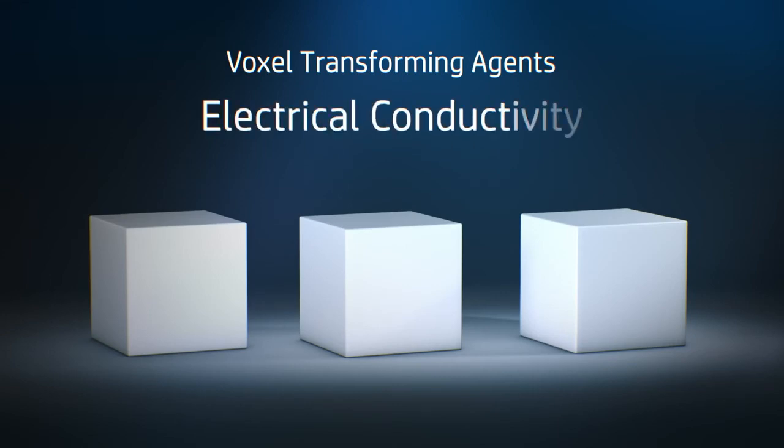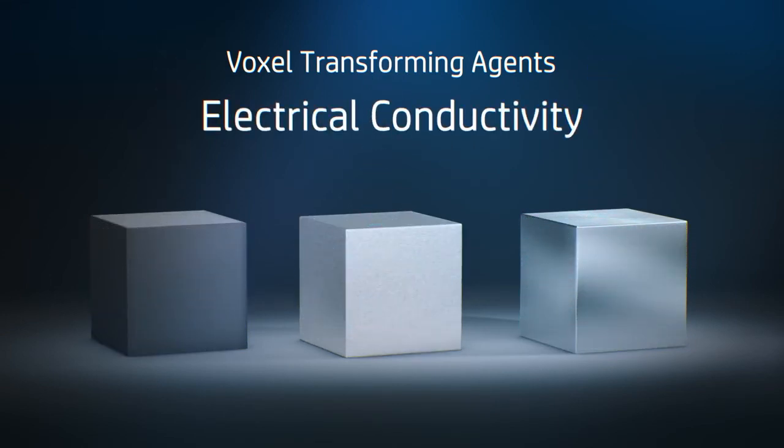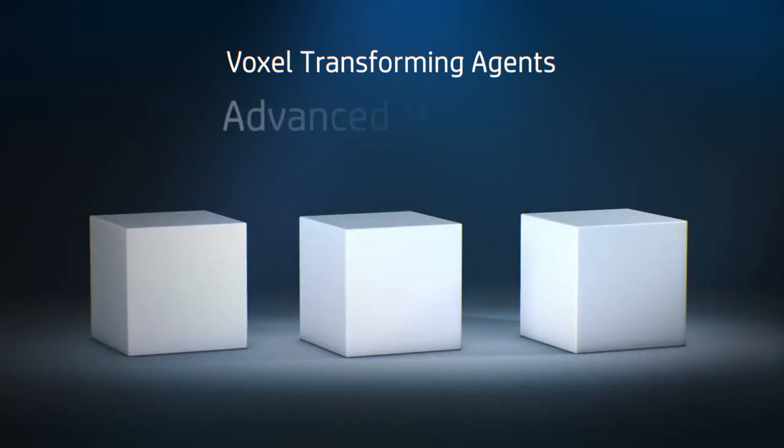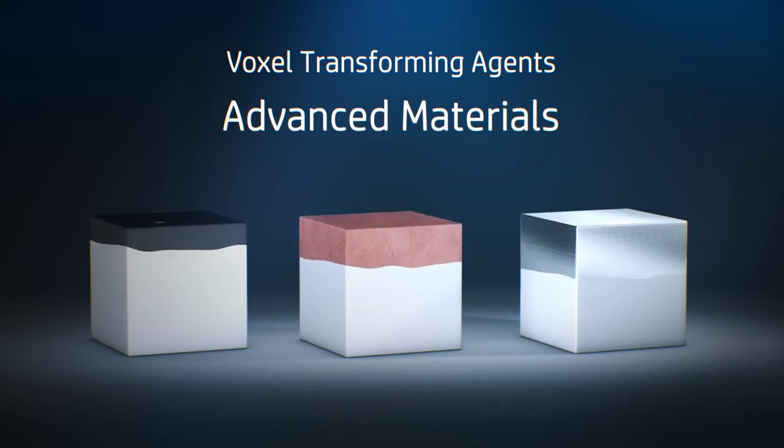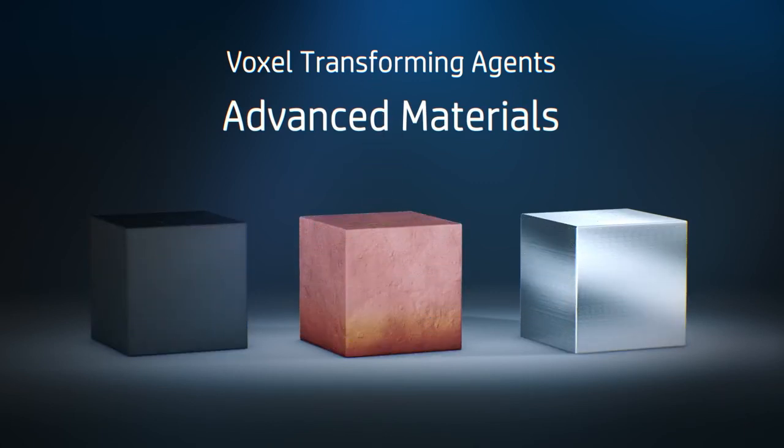The conductivity of certain voxels could also be controlled, enabling embedded electronics. HP Transforming Agents could also be used to enable the printing of new advanced materials or enable emulating different materials at each voxel.